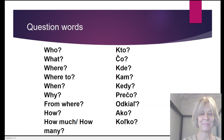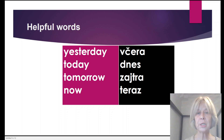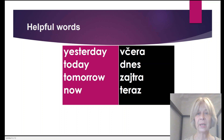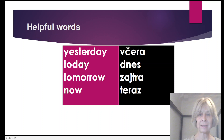A couple more helpful words: yesterday — včera. Today — dnes. Tomorrow — zajtra. Now — teraz. Let's look at the pronunciation. 'Včera' — the 'vč' is very difficult to pronounce so we say it softly. 'Dnes' — the 'd' sounds very lightly because it's also difficult to pronounce — very short. 'Zajtra' is okay. 'Teraz' — it's quite difficult for the tongue, so we say it softly: teraz.